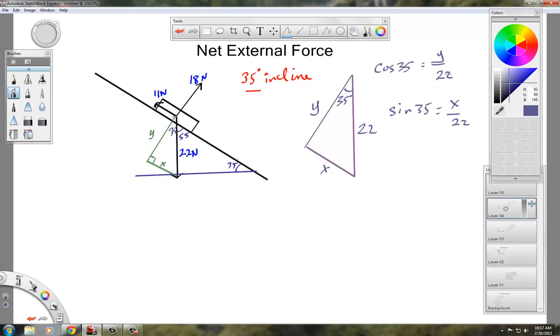So these will each be multiplied together. So we do 22 times the cosine of 35. And that will equal 18. Somewhere around 18. It's like 18.02. And the sine of 35 times 22 will be somewhere around 12.6.